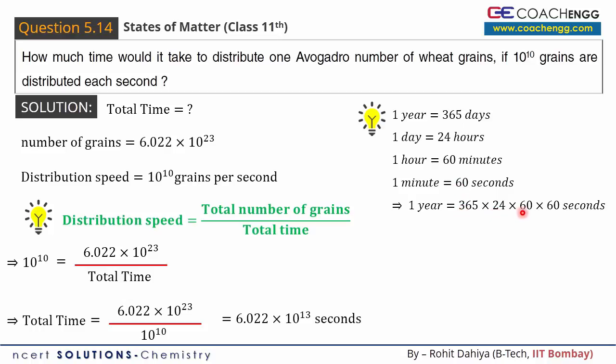To convert to years, we use the conversion factor: 1 year equals 365 days × 24 hours × 60 minutes × 60 seconds, which equals 3.15 × 10^7 seconds. Dividing the total number of seconds by the number of seconds in one year gives our answer in years. You can check this calculation, which equals 1.91 × 10^6 years.